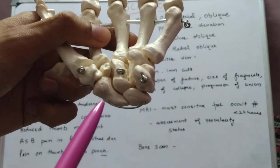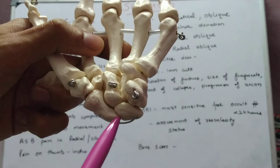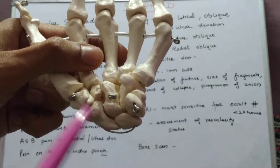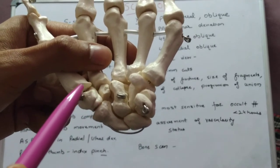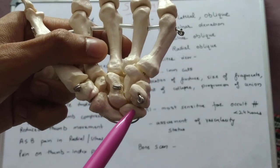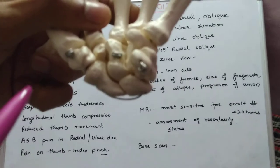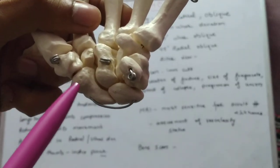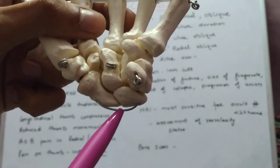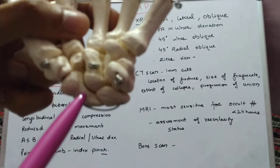The scaphoid bone is one of the most common and most important carpal bones of our hand. It lies in line with the thumb forming the base of the thumb. Laterally it articulates with the trapezium and trapezoid, medially with the capitate and lunate, and inferiorly with the radius bone. The scaphoid has a distal part, a proximal part, and in between an area known as the waist of the scaphoid bone.